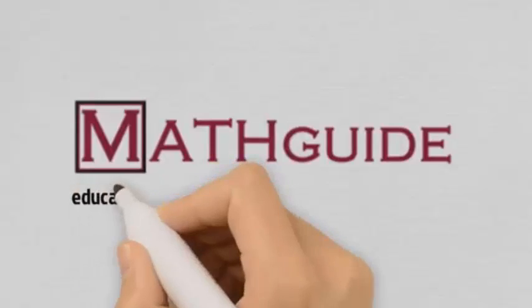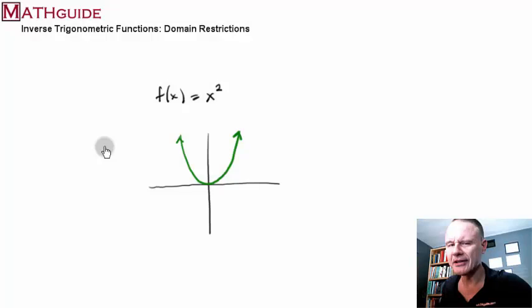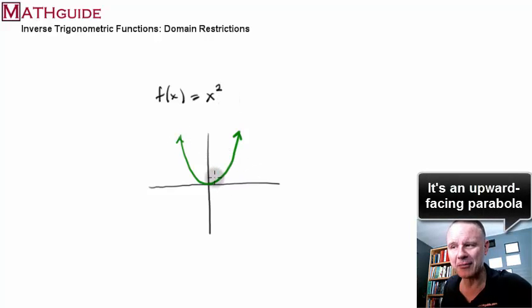This is mathguide.com and my name is Mark Karadimos. Let's go back and look at something that we're familiar. We're familiar with this square curve. This square curve is an upward facing parabola.